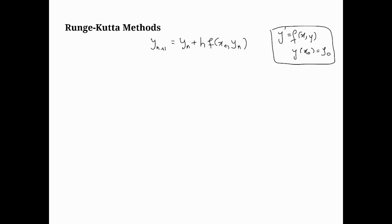The idea of Runge-Kutta methods is: what if we could take steps in between xn and xn+1? So basically you're going from xn to xn+1, which is about h apart — in other words, xn+1 is just xn plus h. The idea is that this h can, for instance, be xn plus h over 2. But the idea doesn't need to stop there; it can be much more flexible, even xn plus αh.